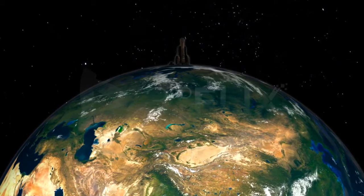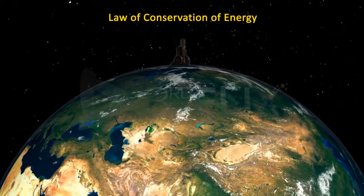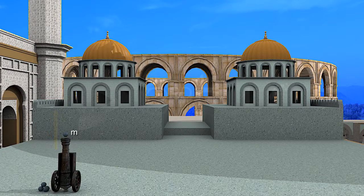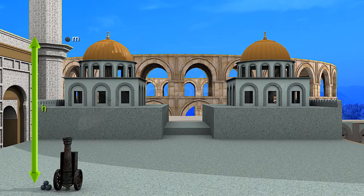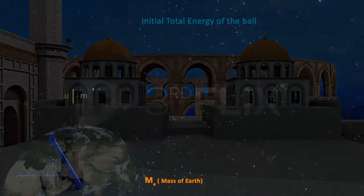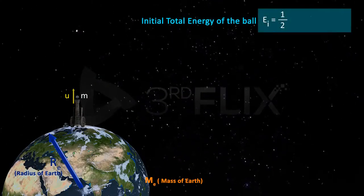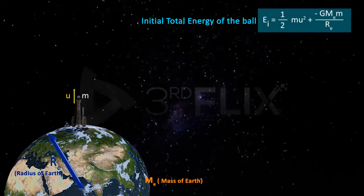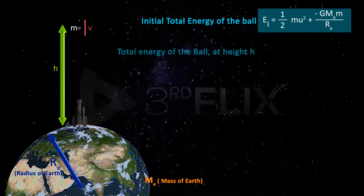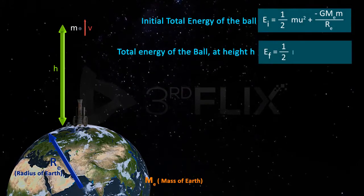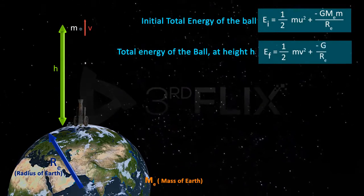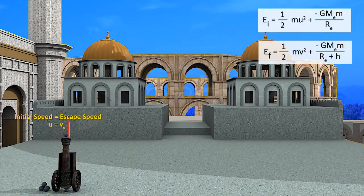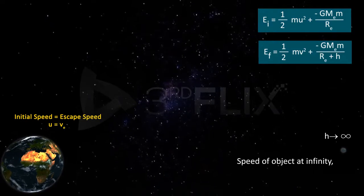We will now calculate escape speed by applying the law of conservation of energy. Consider an object of mass m with an initial speed u on Earth's surface. When it reaches a height h, let its speed be v. The initial total energy on Earth's surface equals the sum of its initial kinetic energy and potential energy. At height h, total energy equals (1/2)mv² + (−G·Mₑ·m)/(Rₑ + h). When initial speed equals escape speed, the speed of the object at infinity is zero.